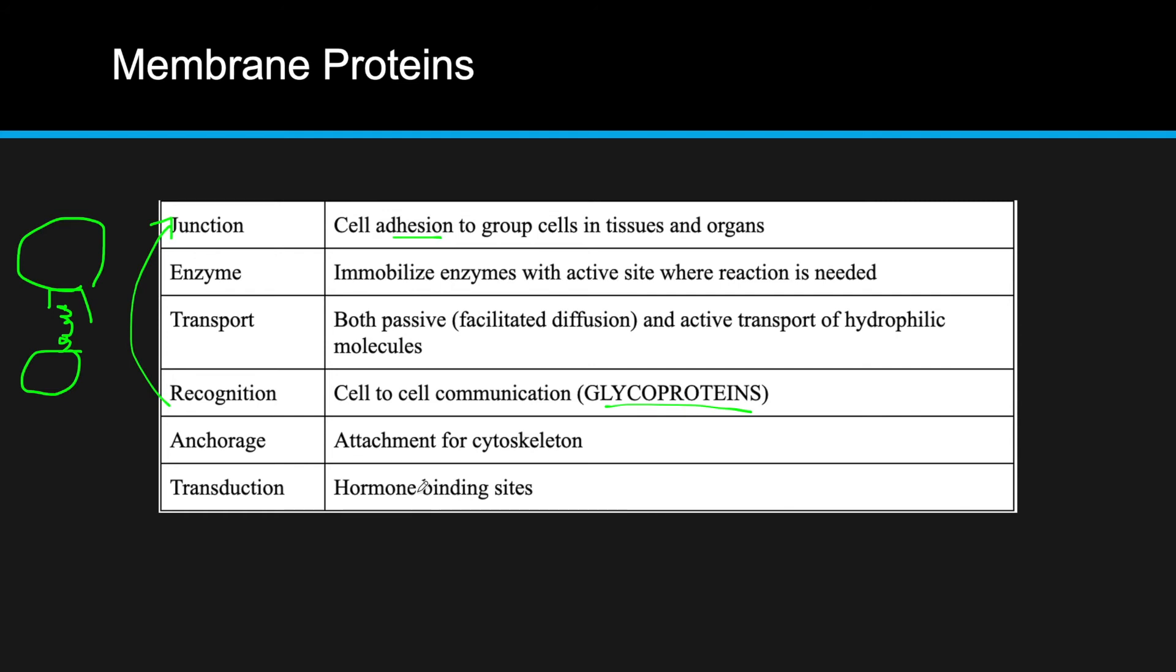Finally, we have anchorage, which is attachment to the cytoskeleton. The cytoskeleton is like filaments within the cytoplasm, and this protein will attach to it. And transduction hormone binding sites. A hormone will come to a protein within the membrane and do its job there. All of these will be discussed in depth later when it's relevant to the endocrine system or immune system.